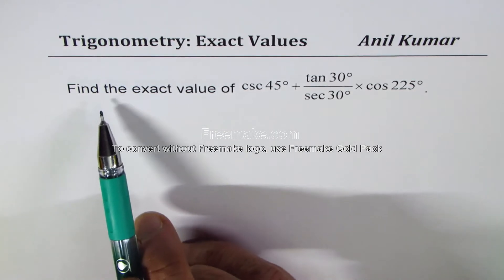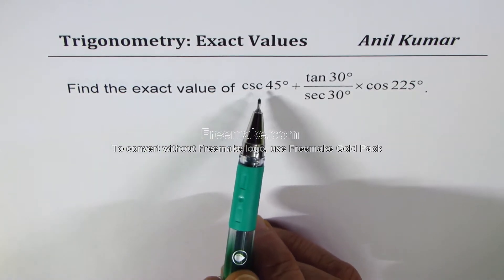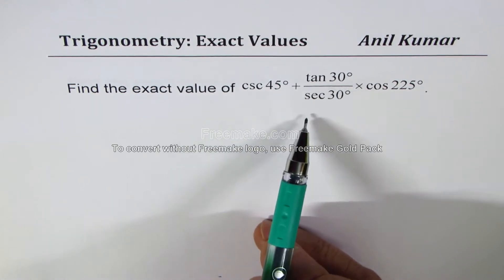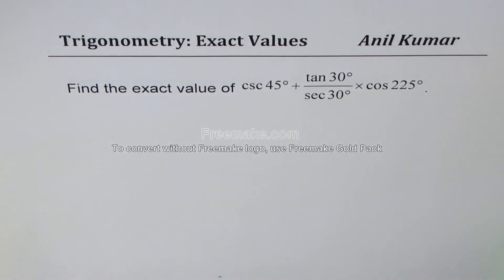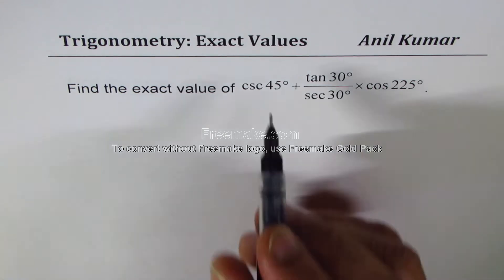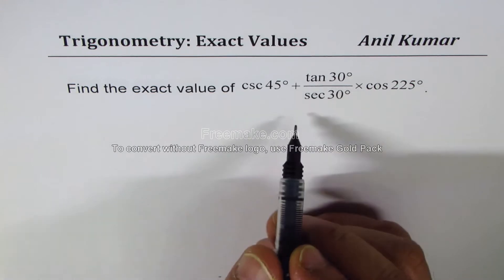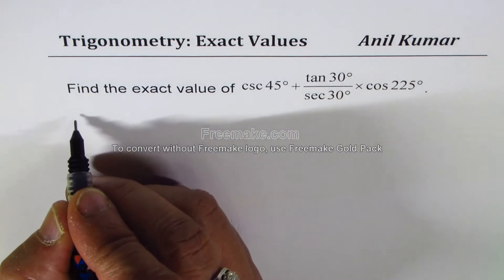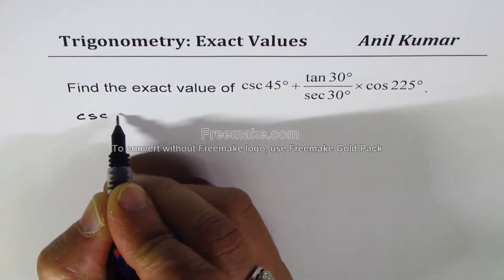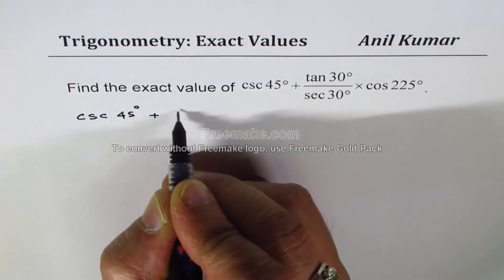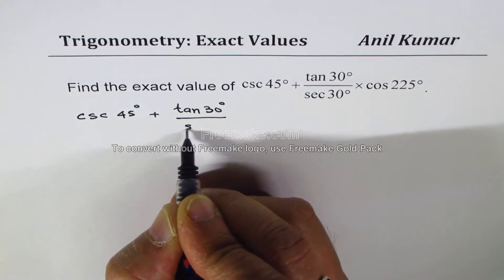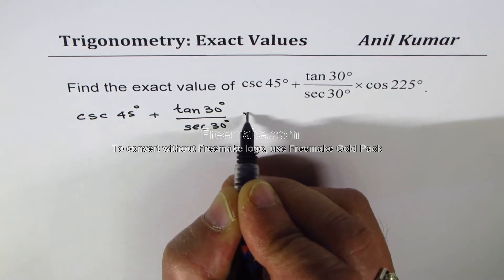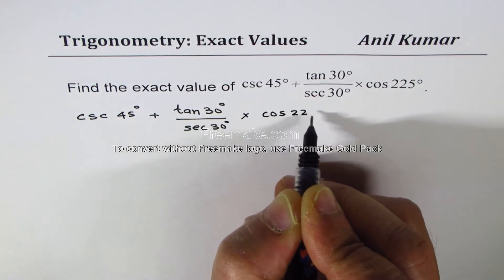The question is: find the exact value of cosecant 45 degrees plus 1030 degrees, divided by secant 30 degrees times cos 225 degrees. To begin with, let's write down the expression with primary trigonometric ratios and acute angles — that's the concept.